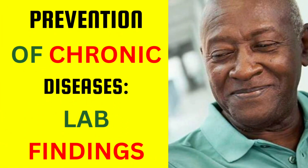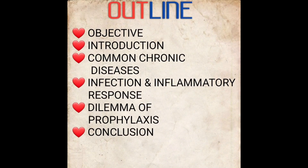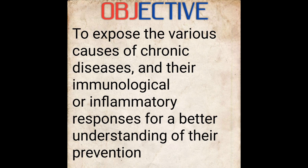Prevention of chronic diseases — lab findings. Outline: Objective, Introduction, Common chronic diseases, Infection and inflammatory response, Dilemma of prophylaxis, and Conclusion. The objective is to expose the various causes of chronic diseases and their immunological or inflammatory responses for a better understanding of their prevention.